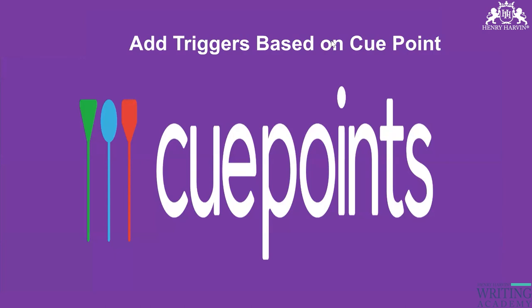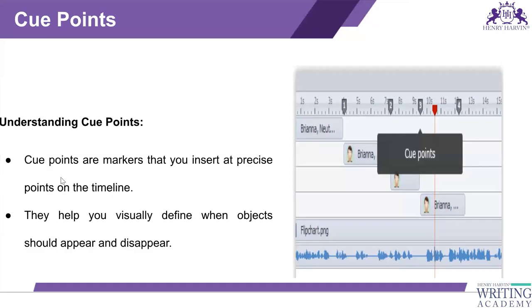Cue points are markers that you insert at precise points on the timeline. This can happen on multiple platforms and websites where you decide what comes where, what page will come there. If I have done this much, it means I have to work on the next topic, the next segment — that is your cue point.